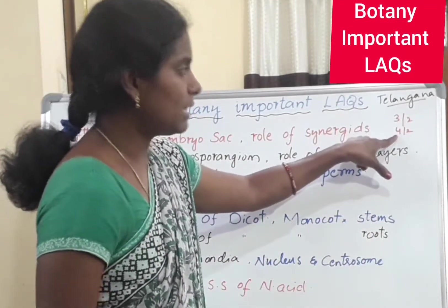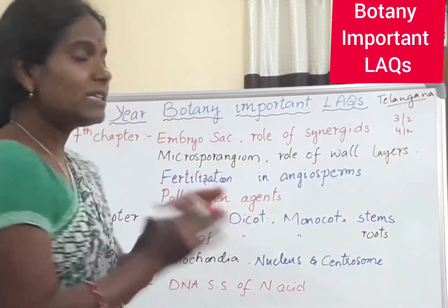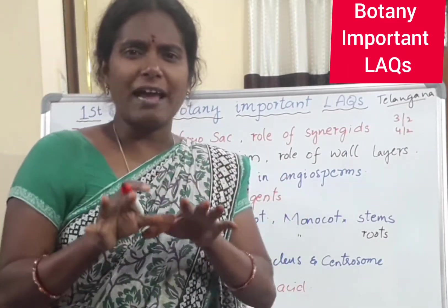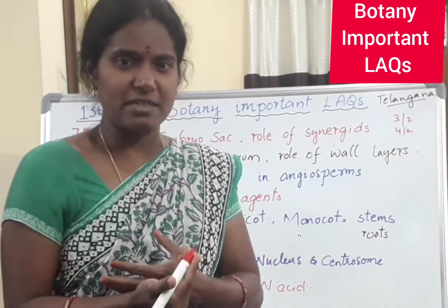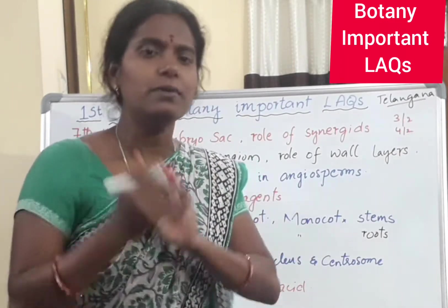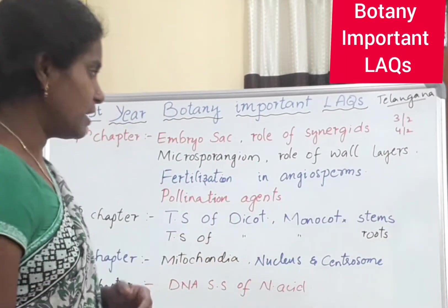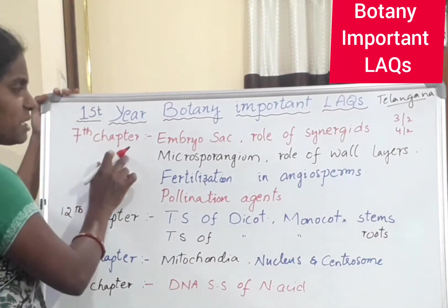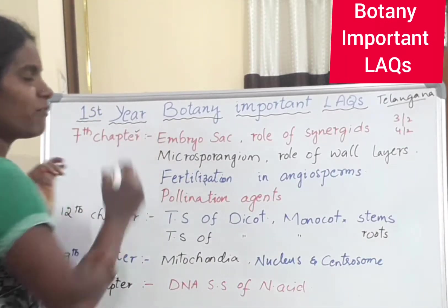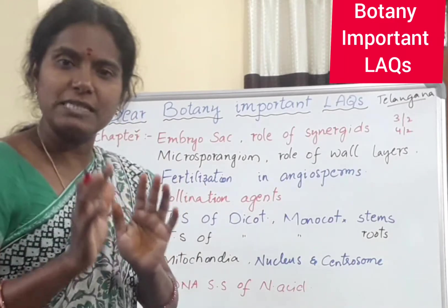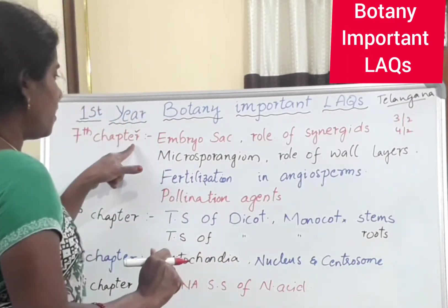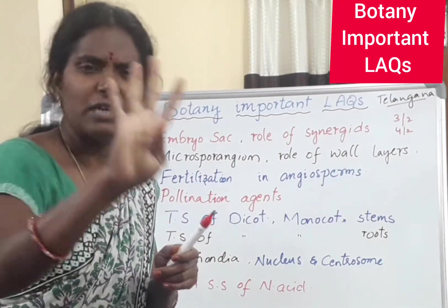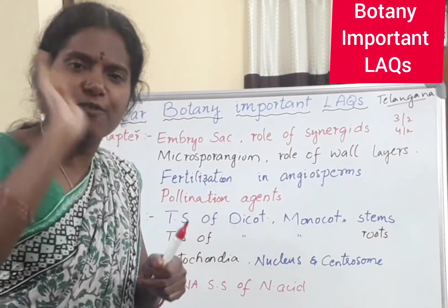From those four questions they give, you should write two. So what are the four chapters from which they'll be giving questions? The seventh chapter is the most preferable chapter for first year BiPC students of Telangana — that is Sexual Reproduction in Flowering Plants. In that chapter, four essay questions are there, and definitely every BiPC student should read from it.